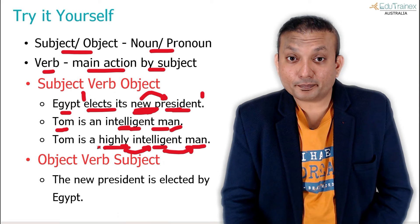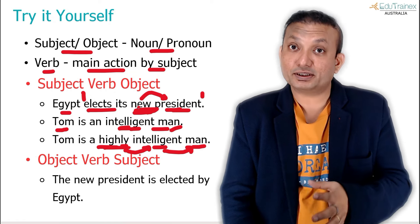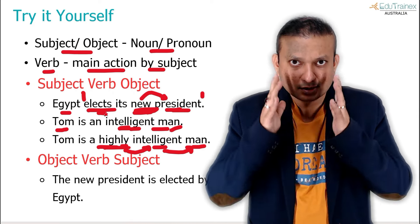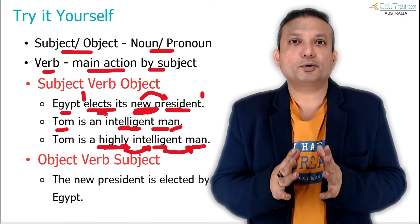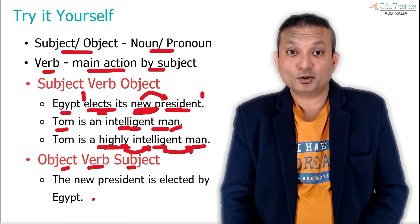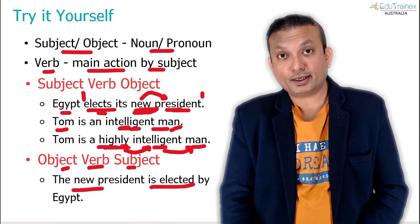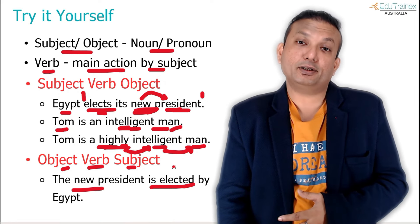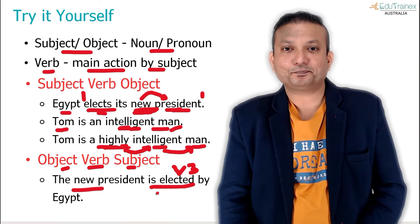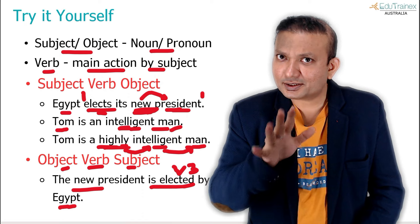'Egypt slowly elects its new president' — the adverb is describing the verb. Start practicing: look at sentences, identify the grammar patterns, and things will become simpler. In passive voice, the object comes in the beginning, verb-3 comes in the middle, and remember — 'is elected,' 'was elected,' 'will be elected' — always verb-3, whether you're talking about past, present, or future. Identify which voice it's written in and then apply the grammar concepts.